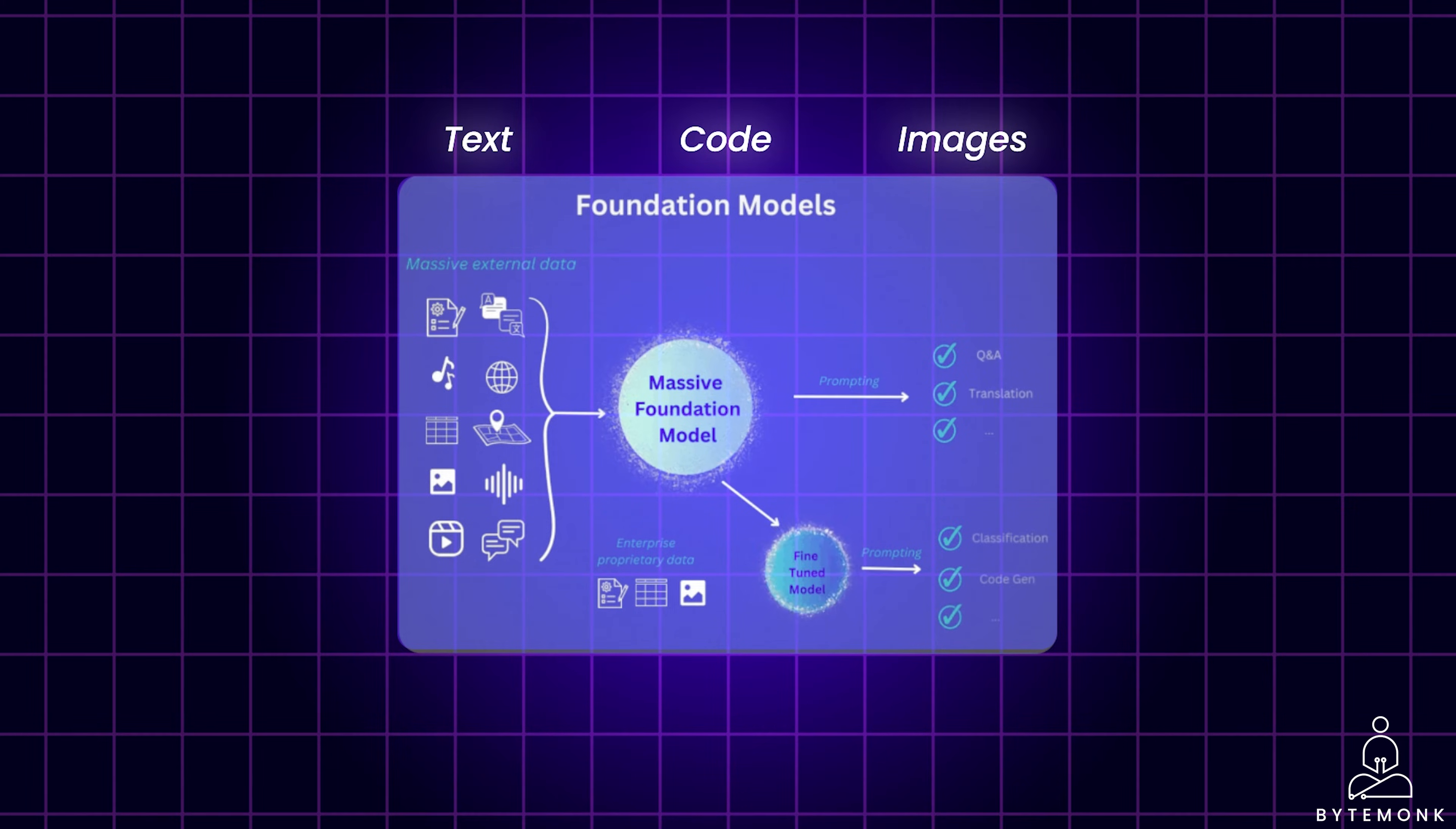So instead of building models from scratch, FMs can be fine-tuned for specific tasks using much smaller targeted datasets. This significantly reduces the need for extensive data labeling. Using pre-trained models and fine-tuning often requires less specialized AI expertise. Developers with less machine learning background can leverage FMs, making AI more accessible.